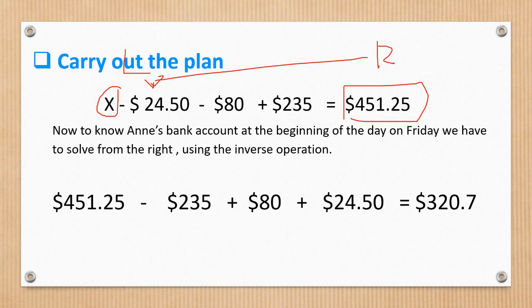So, $451.25 will be our first number. Then, we will subtract $235 because in here, we added $235. So, the reverse of that is minus, subtraction. So, minus $235. Then, in here, it's minus $80. So, the reverse of that is plus. Plus $80.